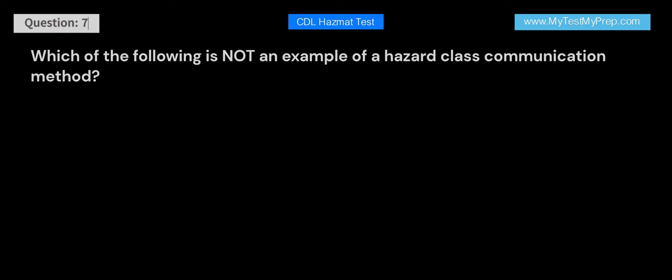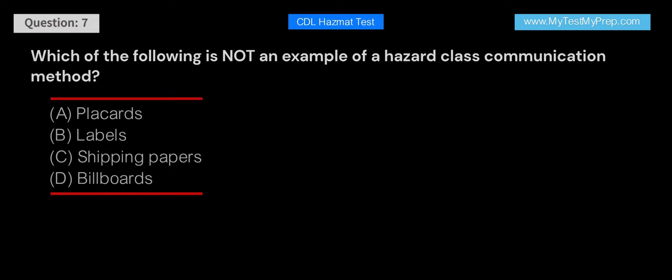Which of the following is not an example of a hazard class communication method? A. Placards. B. Labels. C. Shipping papers. D. Billboards.